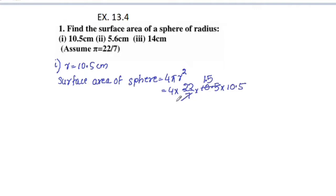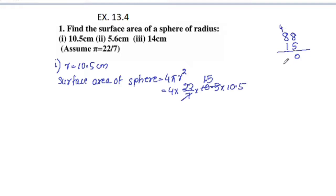22 into 4 is 88. 88 into 15: 8 fives are 40, plus 4 is 44. Continuing the multiplication steps for 88 into 15.